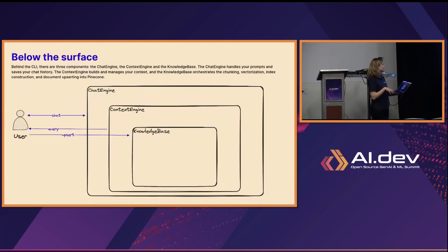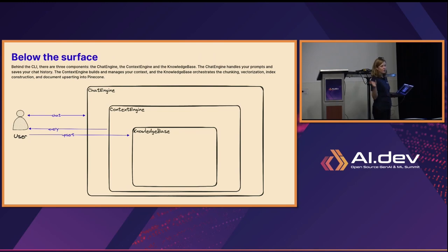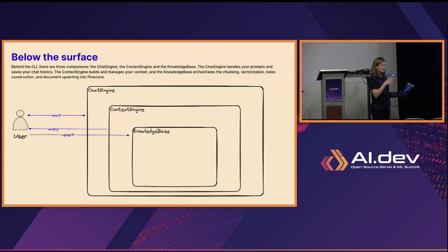Below the surface of the CLI, there are three main components, each embedded within the other but modular so they can be decoupled. First is the chat engine — it handles your prompts, saves chat history, and supports multi-turn and multi-agent conversations. The context engine builds and manages your context from your Pinecone vector database. And the knowledge base orchestrates the chunking, vectorization, building the actual Pinecone database, and upserting documents to Pinecone.